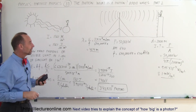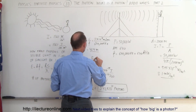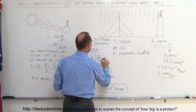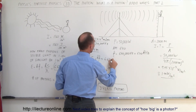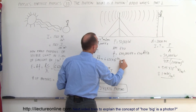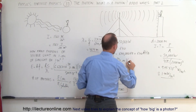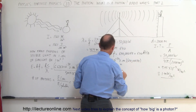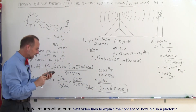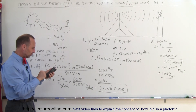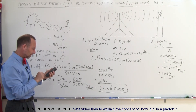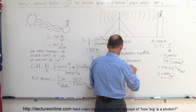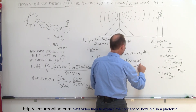Now let's find the energy for a single photon of radio radiation. The energy for one photon equals h times the frequency: 6.626 times 10 to the minus 34 joules·seconds times 640,000 hertz. Computing that gives us an energy of 4.24 times 10 to the minus 28 joules per photon — a very tiny amount of energy.